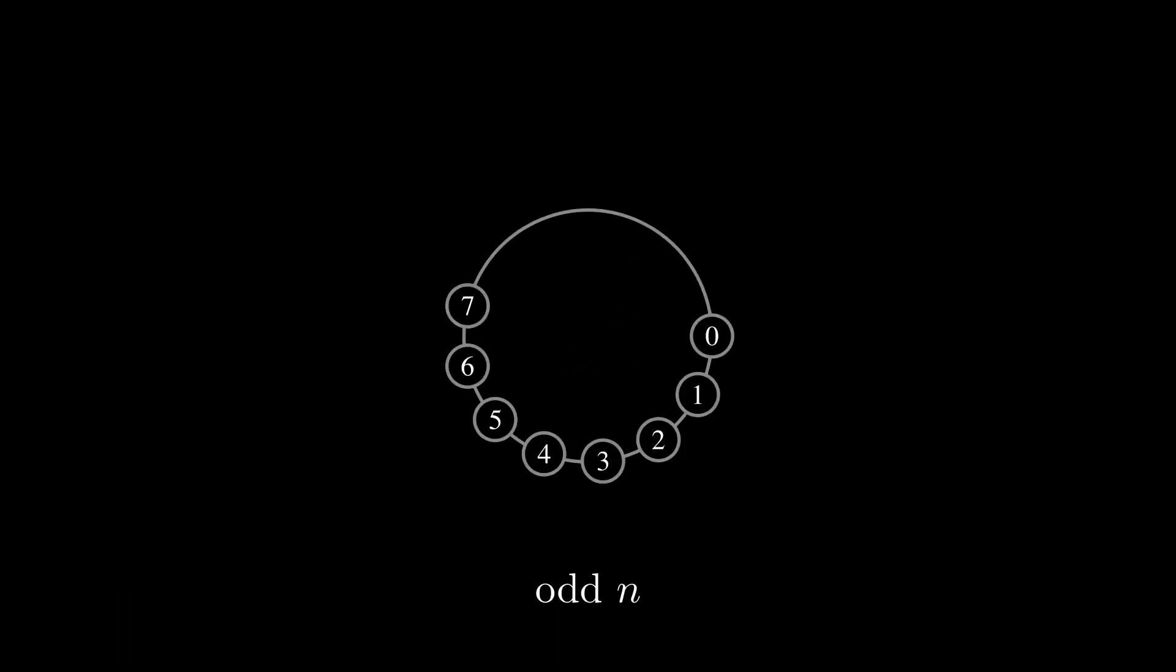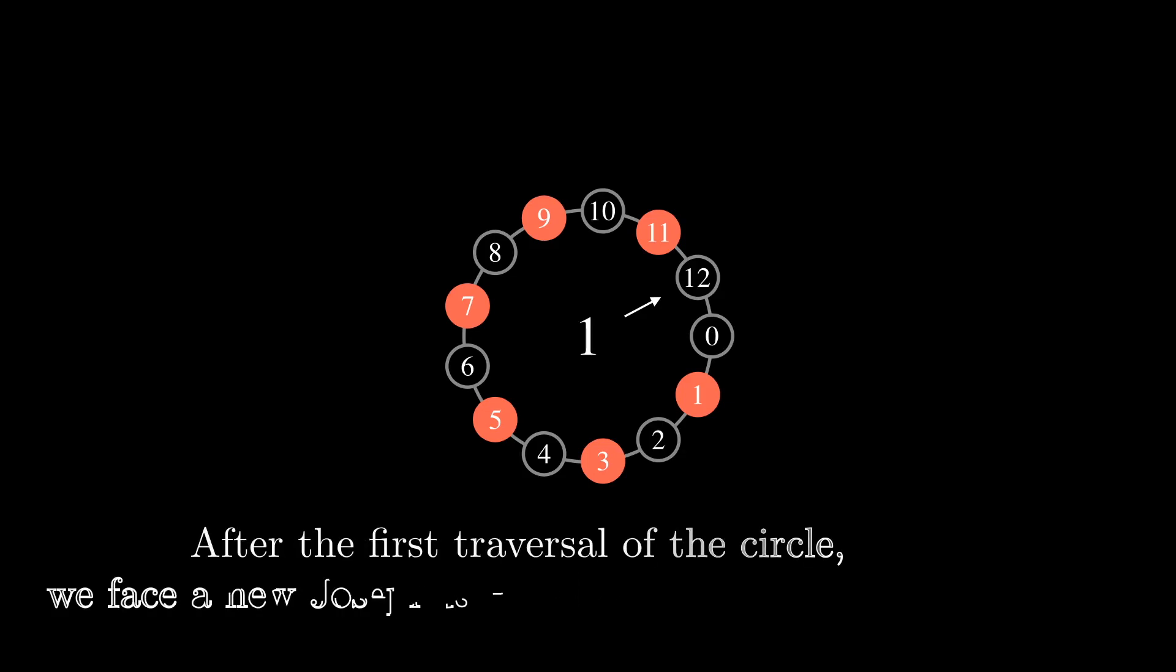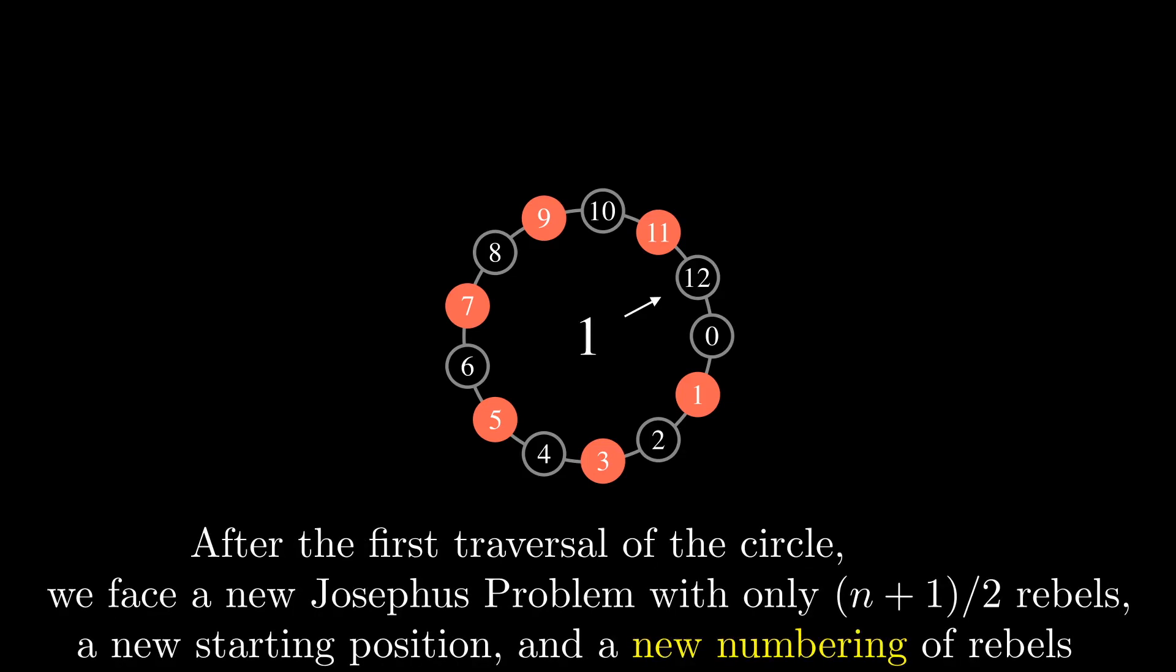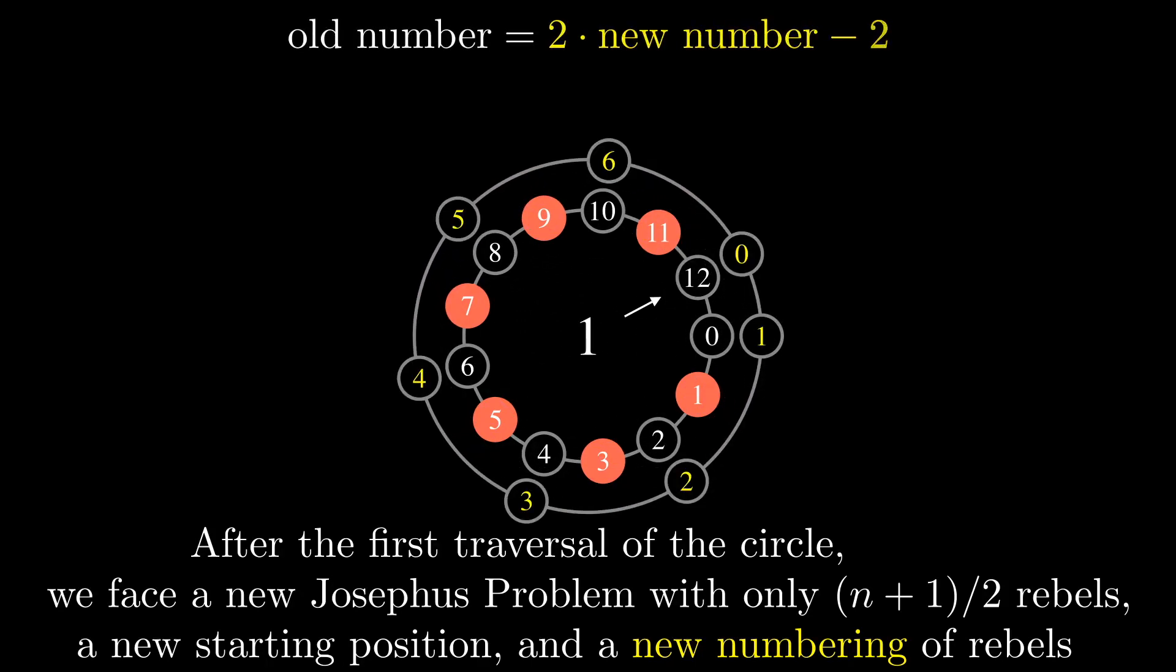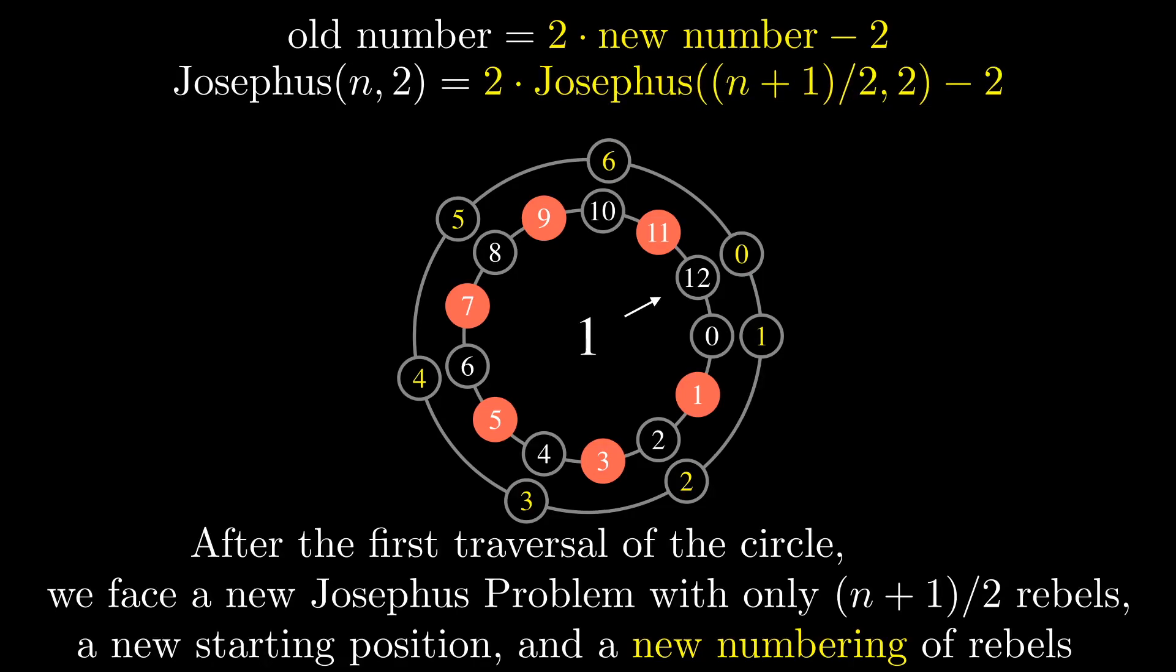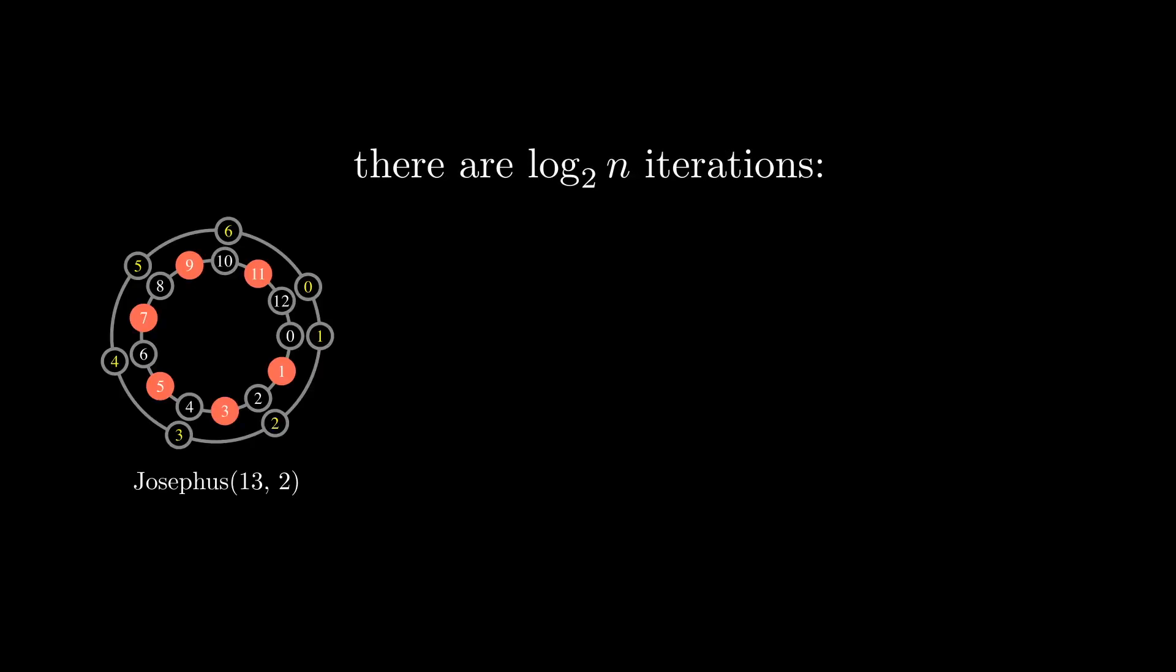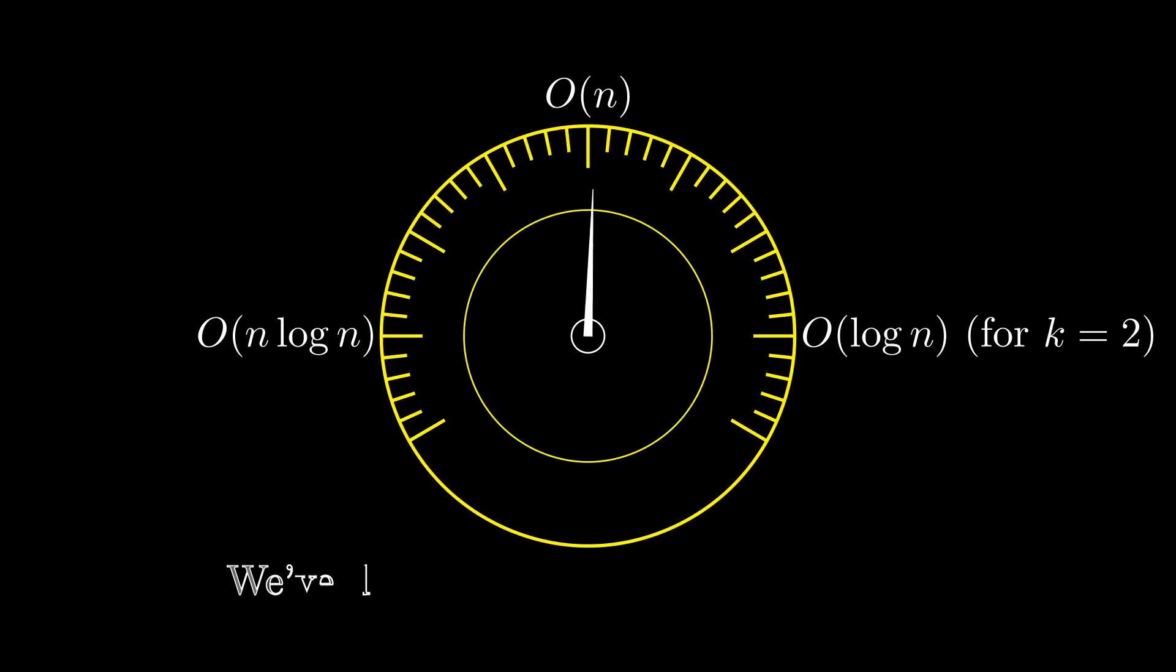In the case of odd number of rebels, the formula changes. After the first traversal of the circle, we have (n+1)/2 rebels, a new starting position, and a new numbering of rebels. Here is a similar formula for transforming old numbers into new numbers, this time for an odd n. Thus, Josephus(n, 2) is equal to 2 times Josephus((n+1)/2, 2) minus 2. Technically, this formula should be taken by modulo (n+1)/2. We leave it to you to figure out the details. You know, no pressure, only just trapped in a cave and being senselessly killed off slowly. But again, no pressure. All together, recurrences for even and odd n lead to only log n iterations for solving the binary Josephus problem.